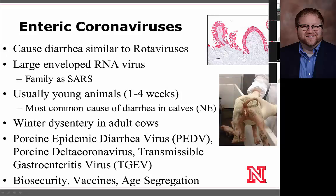Another common pathogen found in manure is enteric coronaviruses — viruses that infect the digestive system. Coronaviruses infect cells in a variety of animal species and cause diarrhea in young animals similarly to rotaviruses. However, these are larger enveloped RNA viruses, making them less stable in the environment and easier to eliminate than rotaviruses. Susceptible animals are usually young, around one to four weeks of age. The bovine enteric coronavirus is the most common cause of diarrhea in calves.